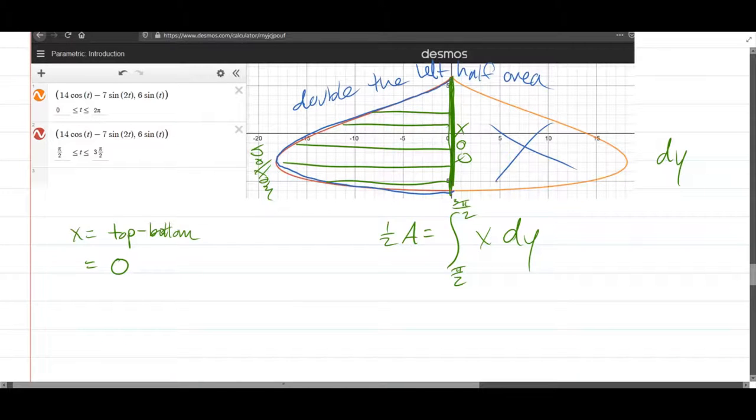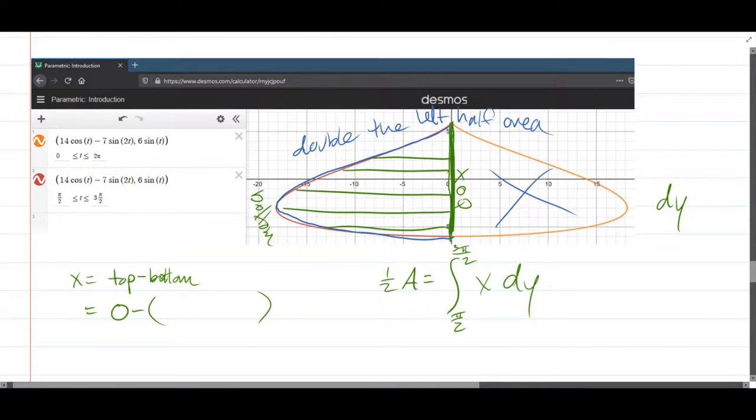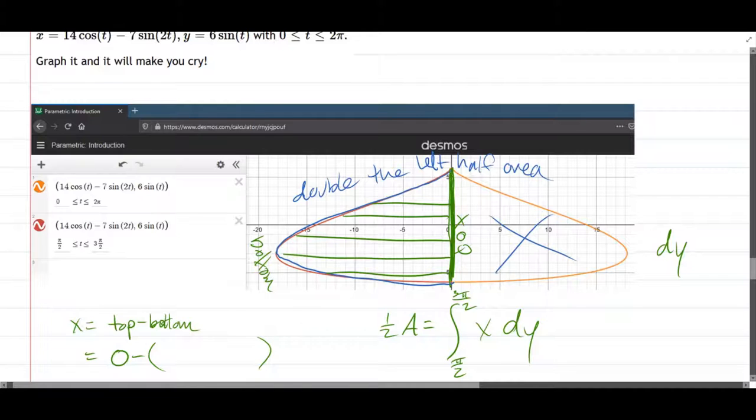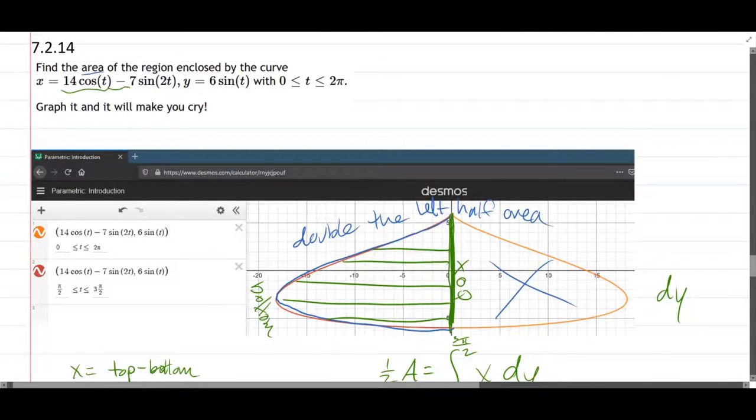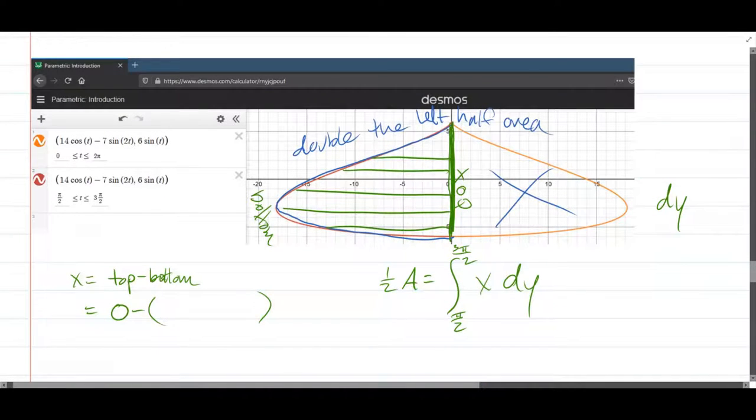So that line right there is x equals 0. So what's the bottom function? The bottom function is whatever they gave us originally, which is, you'd be careful, it's the x function right there. So it's 14 cos t minus 7 sine 2t. So that is x.